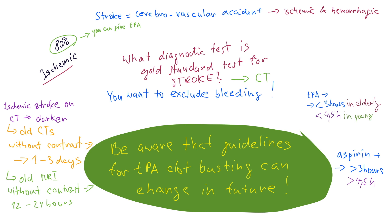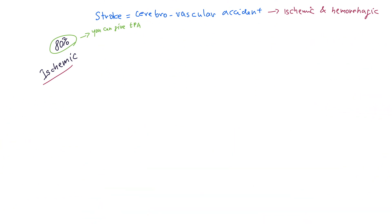There's one more thing you can do, and it's becoming more and more popular as technology advances. Even with an ischemic stroke where you have a thrombus somewhere, you can do anti-arresting — find the thrombus and pull it out mechanically. That mechanical thrombectomy is another treatment option.